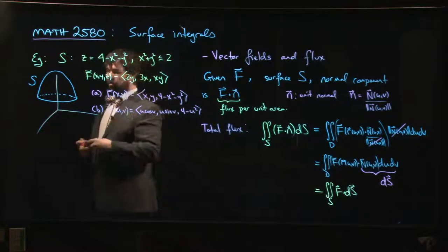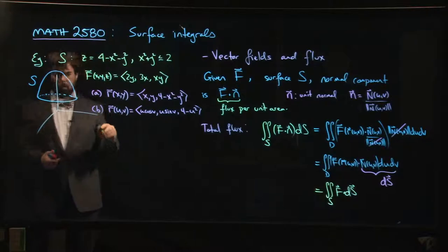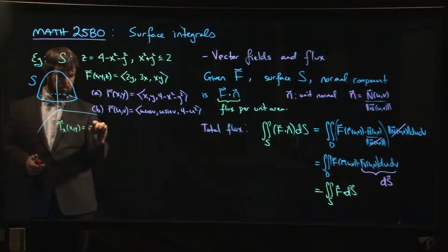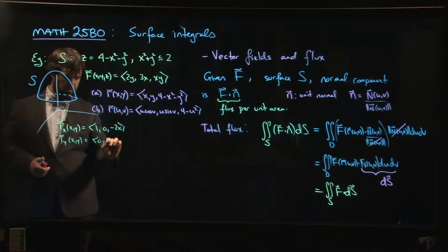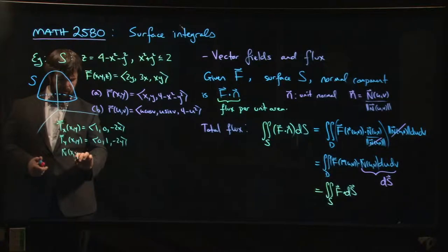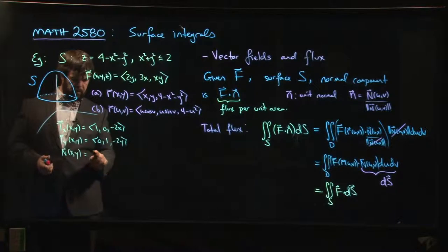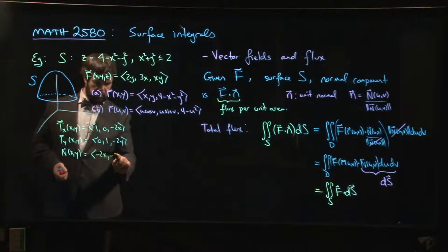Okay, so let's see how that would look. Let's go with plan A, let's see what the normal vector looks like. So my tangents are going to be (1, 0, -2x) and (0, 1, -2y).